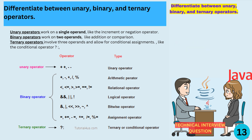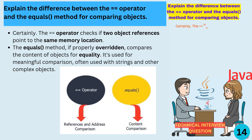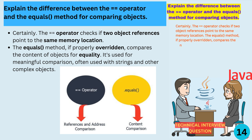Explain the difference between the == operator and the equals method for comparing objects. The == operator checks if two object references point to the same memory location. The equals method, if properly overridden, compares the content of objects for equality. It's used for meaningful comparison, often used with strings and other complex objects.